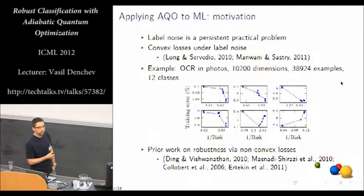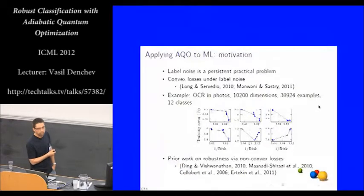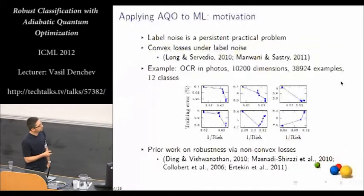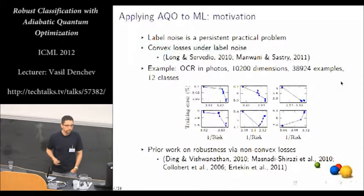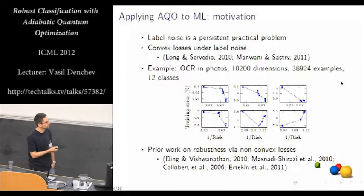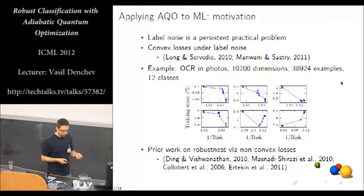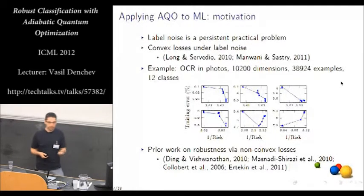Usually what we want to see when we train a binary classifier is that as we optimize the objective function better and better, this is from left to right here on the x-axis, the training error should be going down, right? And this is what happens in some of these training problems when using a convex function. But in others, the training error might be going down up to some point and then starts going up, or it would be going up all the way as we optimize better and better. And this is completely a broken training problem. And we don't want to do this. And the reason why this happens is that the label noise in the data creates large negative margins that get severely penalized by a convex loss function because the convex loss function has unboundedly growing penalties for such large negative margins.